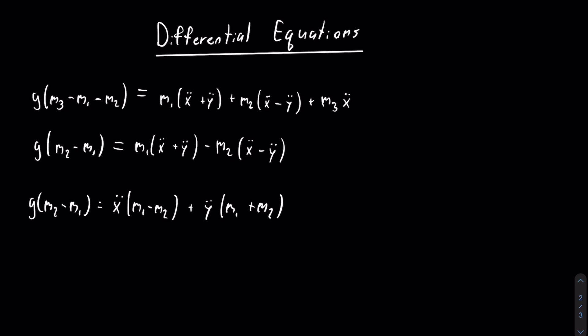From here, it's pretty easy to isolate x double dot. All you have to do is subtract y double dot times m1 plus m2 on both sides and then divide both sides by m1 minus m2. And you will get this.